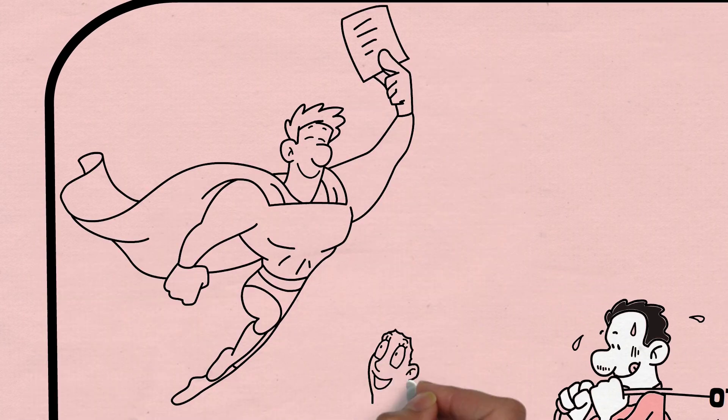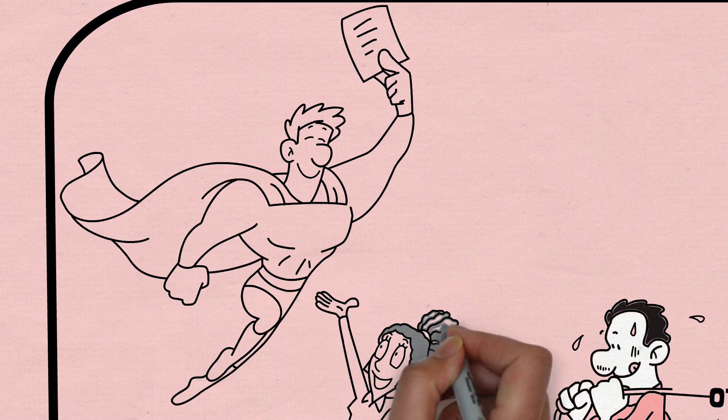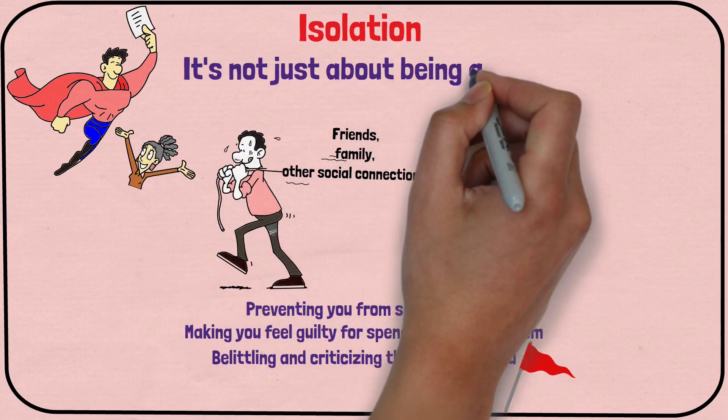When someone is isolated, they become more dependent on their abuser, making it harder for them to leave the relationship. But it's not just about being alone.